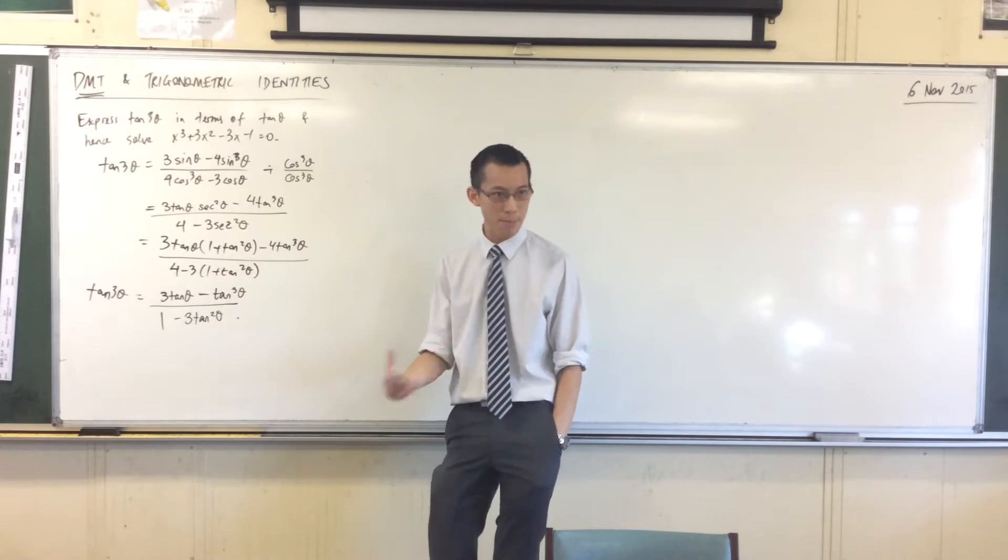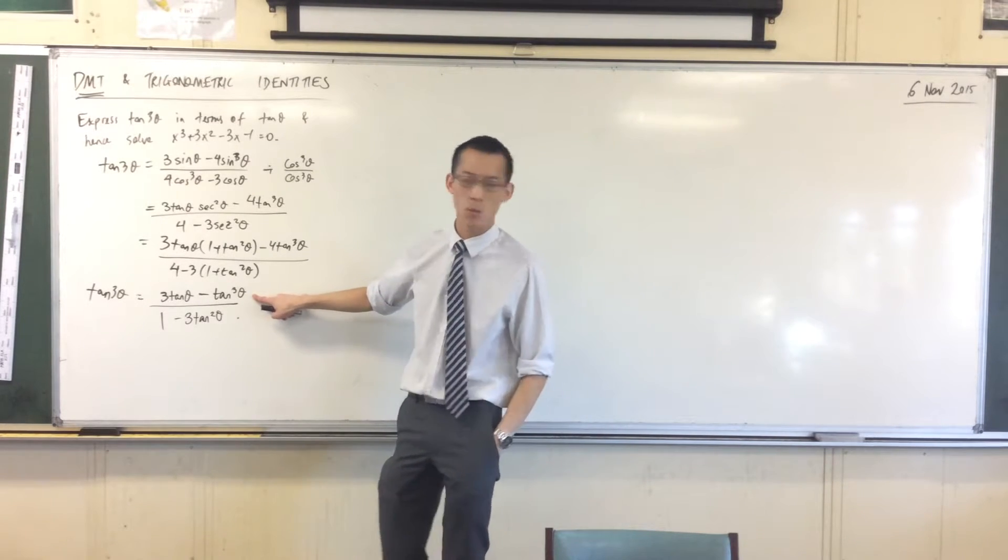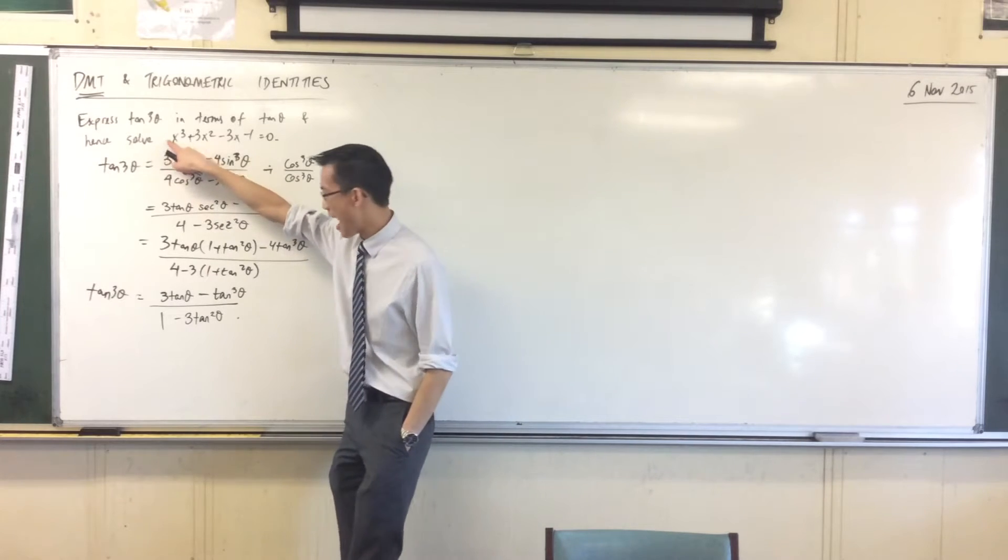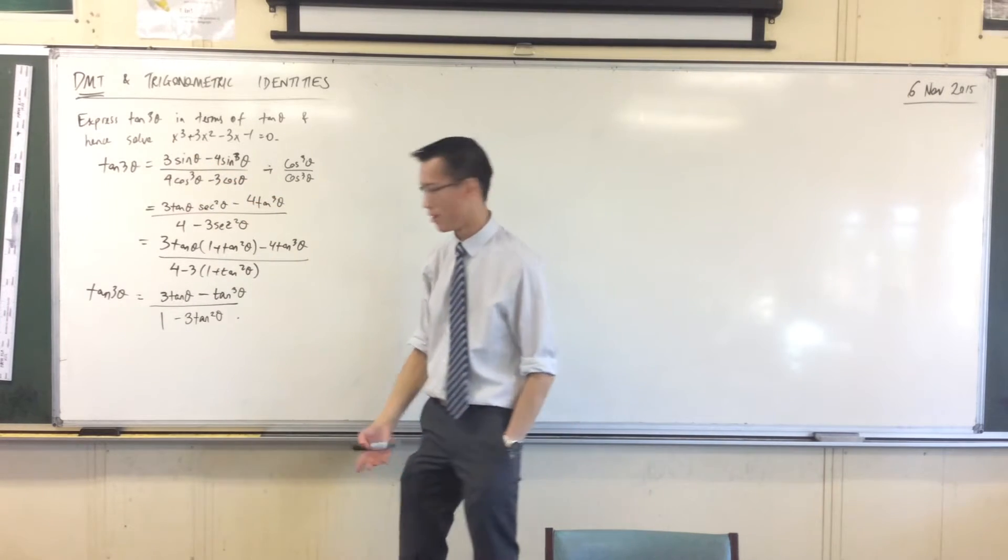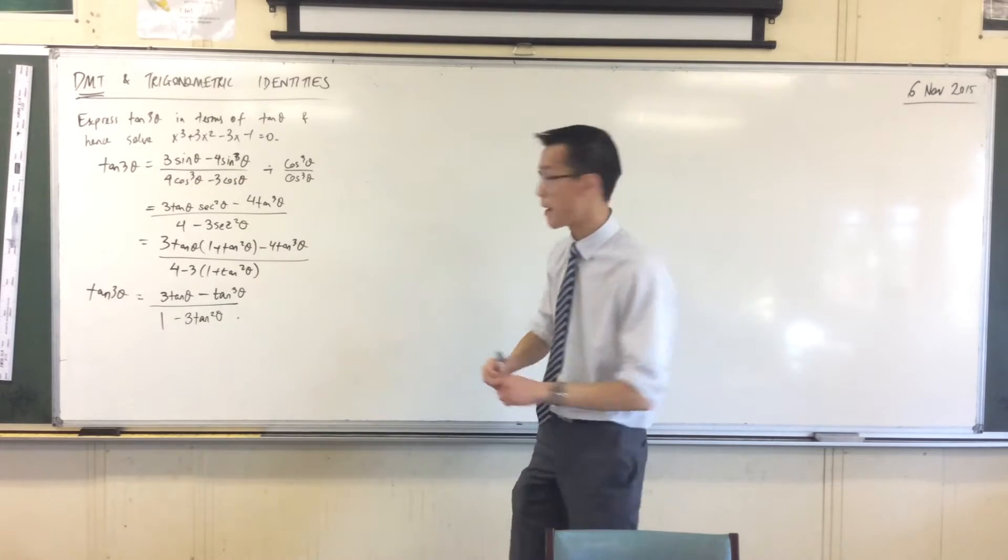And do you notice the numbers that I have here, how many tan cubes do I have? Well, I have negative one. How many tan squareds do I have? I have negative three of them. That's kind of sus, right? Let's unpack this.